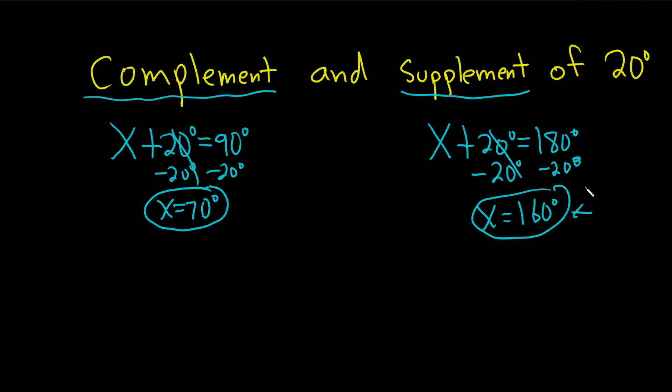So this would be the supplement of 20 degrees. And 70 would be the complement of 20 degrees. So this would be the supplementary angle.